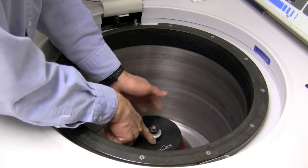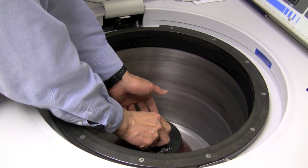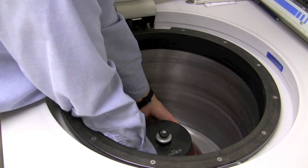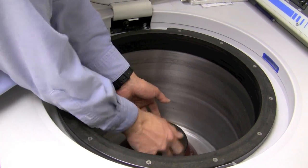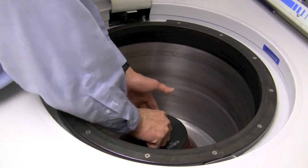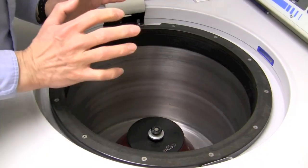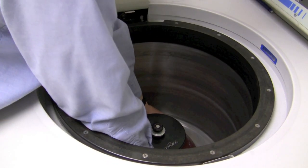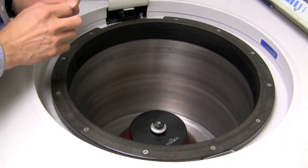That attaches the lid to the rotor, and now the black ring will actually attach the whole assembly to the spindle. And I always check this by taking both hands and lifting up gently to see that it's firmly in place.